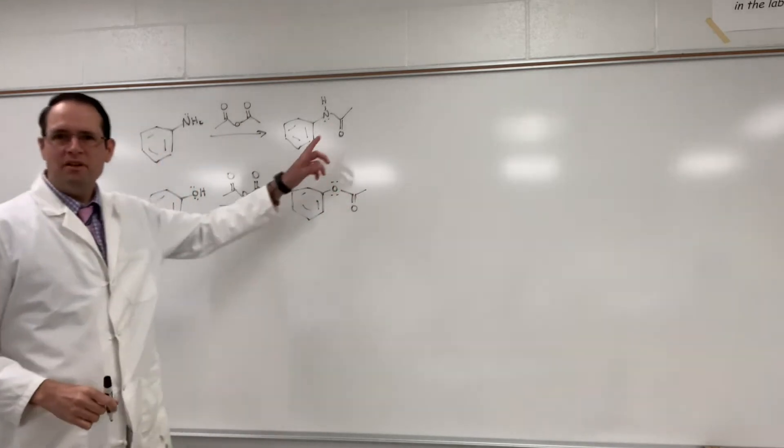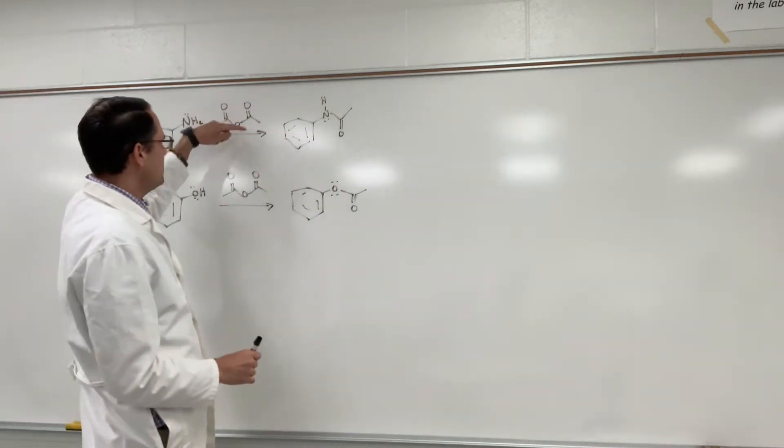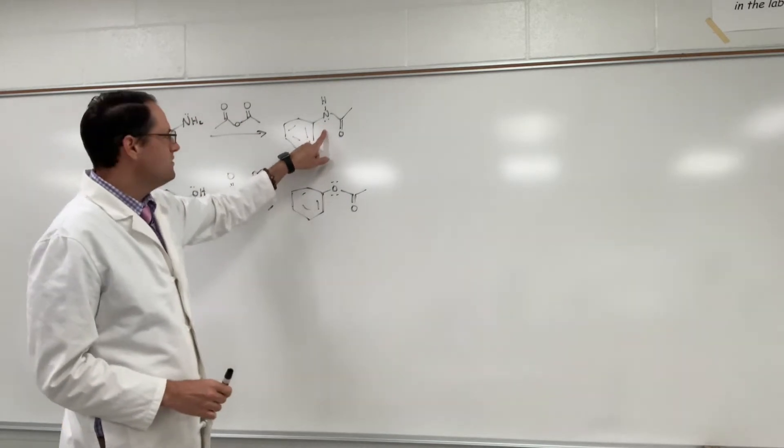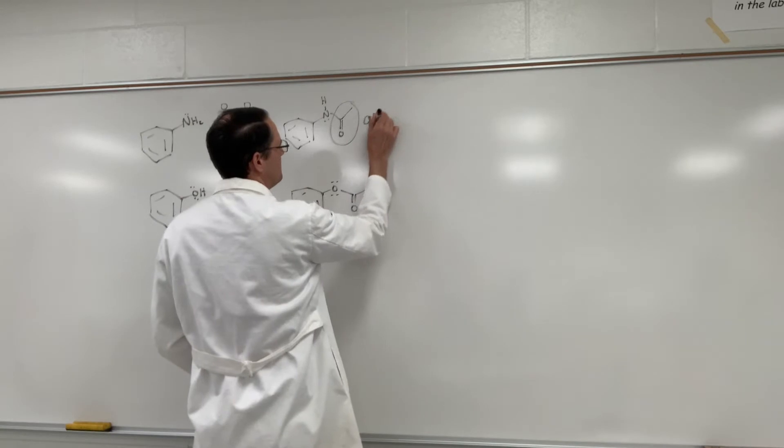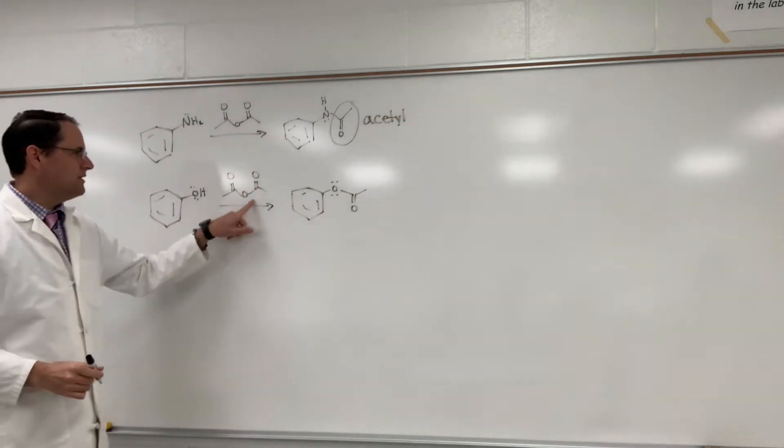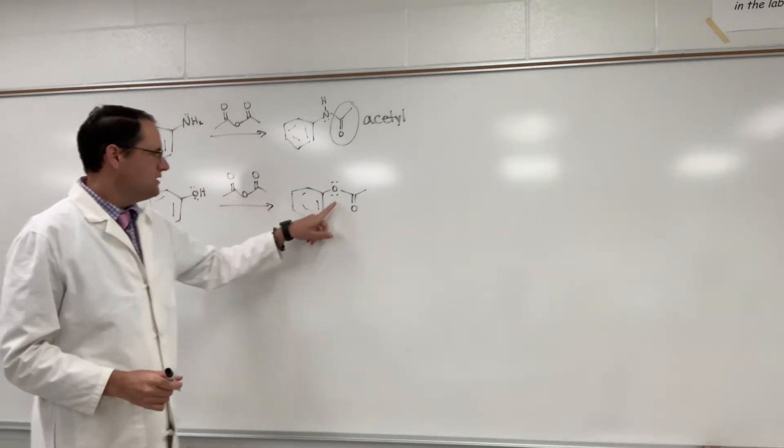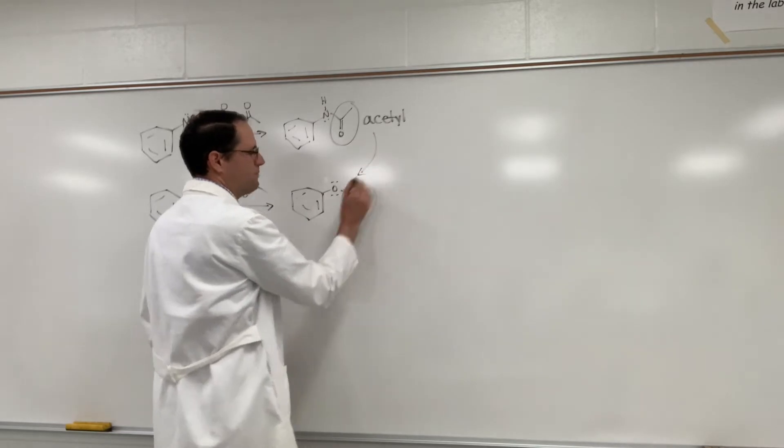In the top example here we have aniline being acetylated with acetic anhydride to form this amide and this is your acetyl group. Here we have phenol reacting with acetic anhydride to give this ester and once again this is your acetyl group.